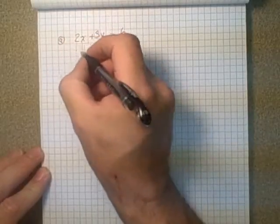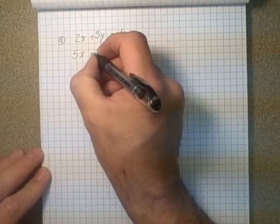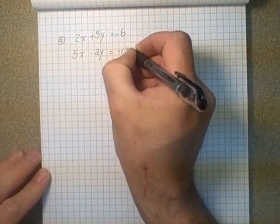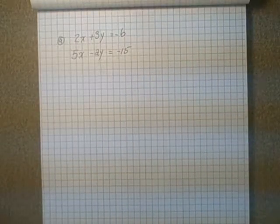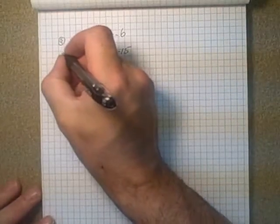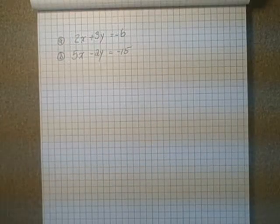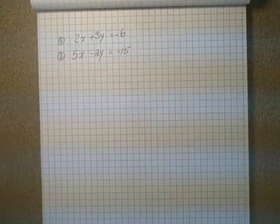And we also had 5x minus 2y is equal to negative 15. Okay, so this one here was more complex, and we'll put that as equation B. More complex than the other example because none of the variables have a single coefficient in front of them, making it easier to work with.